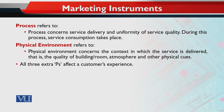Is ke saath saath do aur important cheezein hain: process aur physical environment. Process concerns service delivery and uniformity of service quality — during this process, service consumption takes place. Jo procedure ho raha hai, customer ya khud us process mein se guzar raha hai — jaise education, beauty parlor, hair dressing, health service — ya us ki koi belonging us process se guzar rahi hai. Is process ka satisfactory aur efficient hona bahut important hai in order to deliver that service successfully.